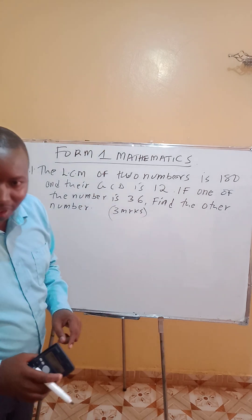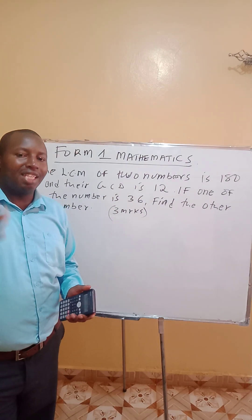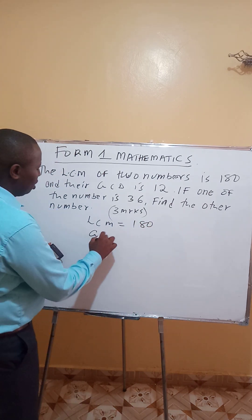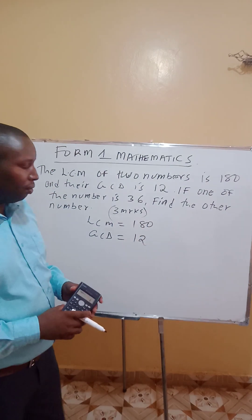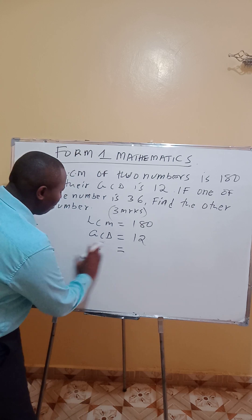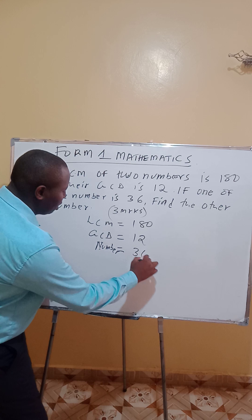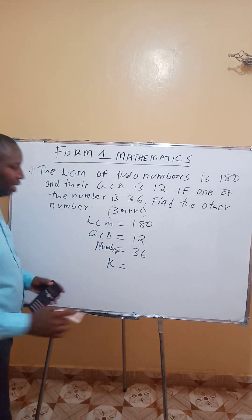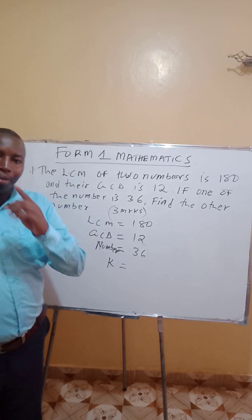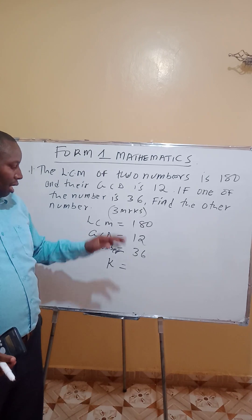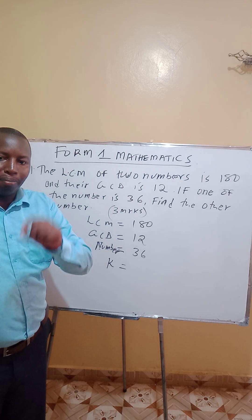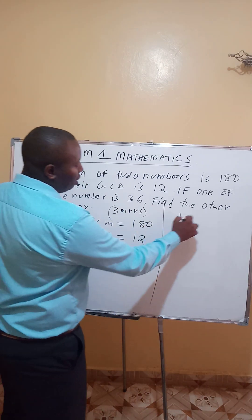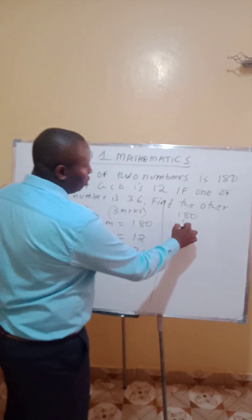If one of the numbers is 36, find the other number. So in this case you are finding the second number. You have the LCM of the two numbers which is 180, and the GCD is 12, and one of the numbers is 36. Let's say the second number is K. Step number one: express the LCM, the GCD, and the first number 36 in prime factors.